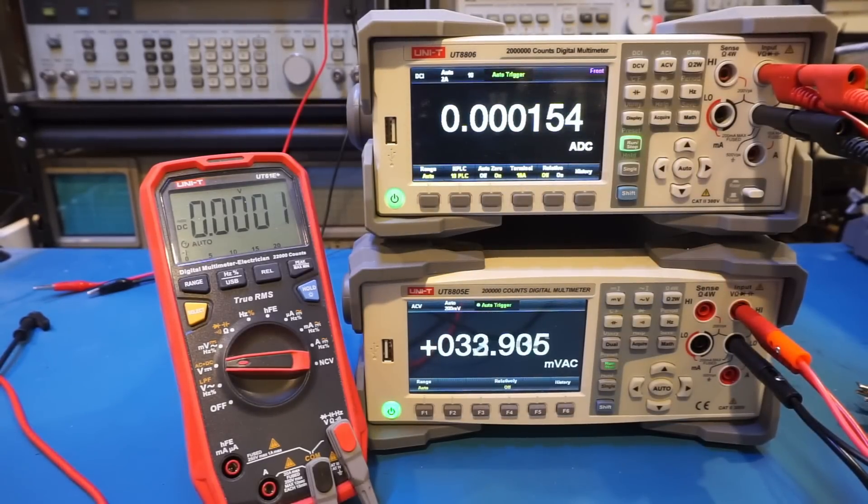Well, what's the advantage, you may ask? One of the advantages, at least in current mode, is that you can use the 10 amp range to measure a small current, and the resulted burden voltage would be very small. Let me demonstrate that.